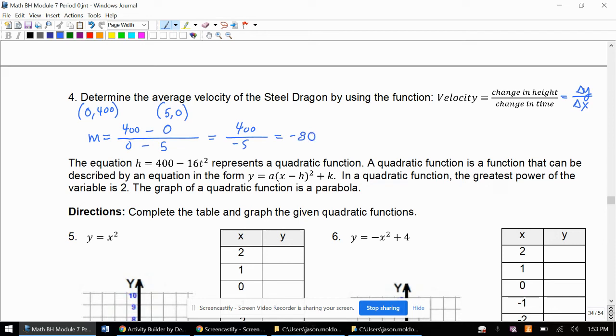And the label for this is the same as the label for the numerator and the denominator, which is height, which is feet, and time, which is seconds. And so this is at an average speed of negative 80 feet per second.